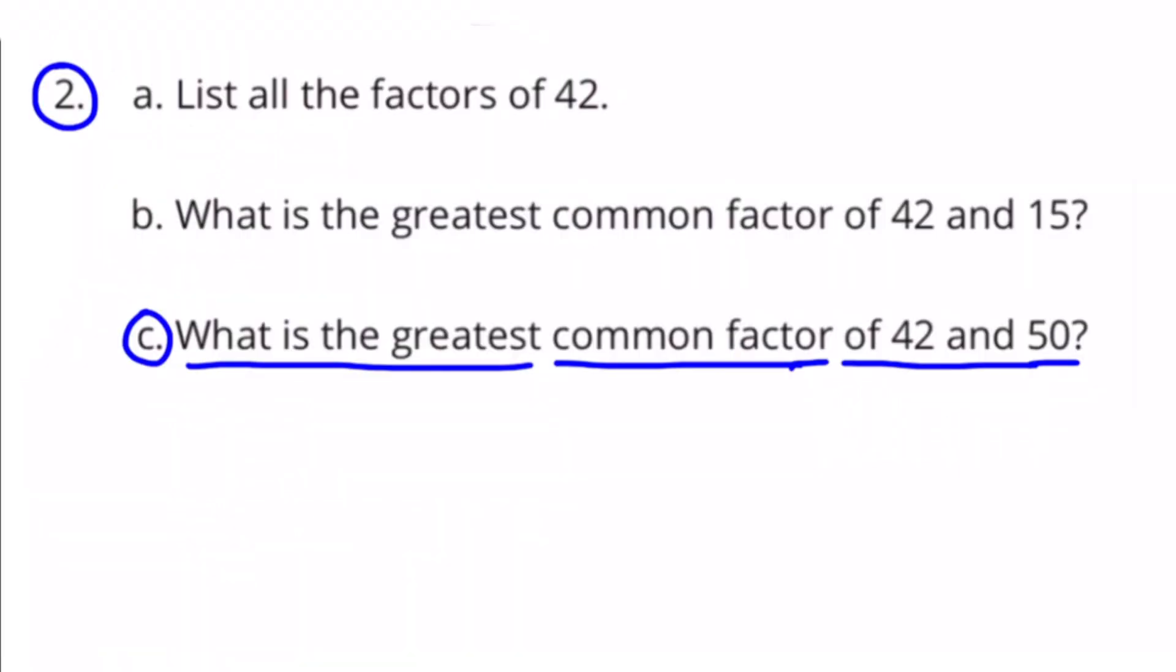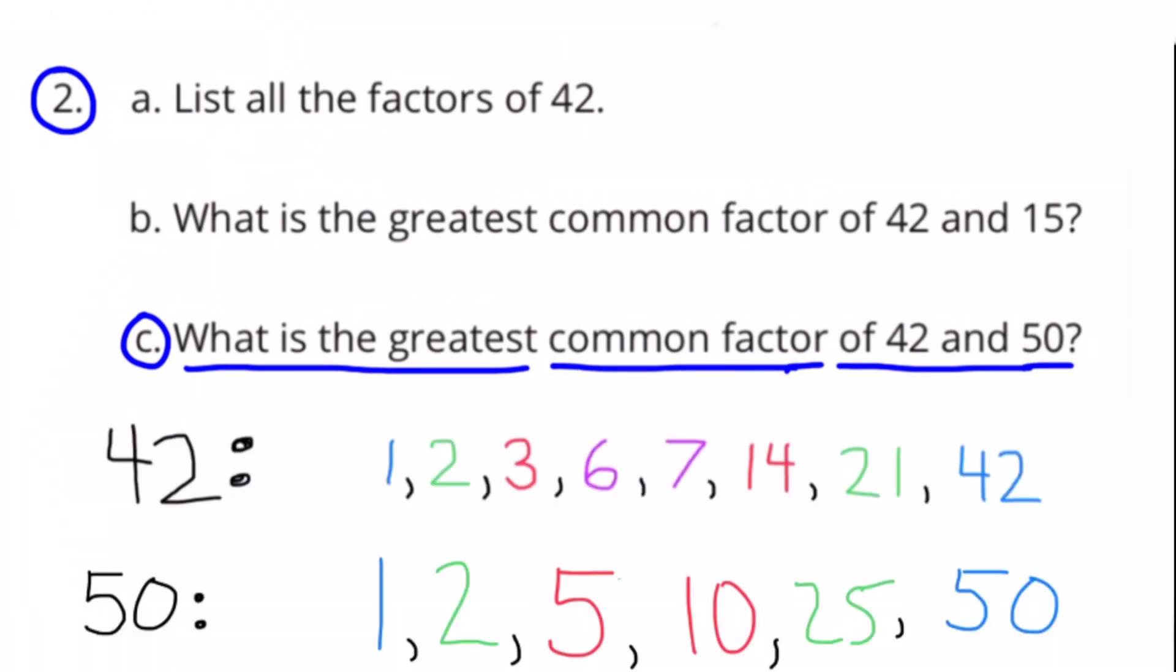2c. What is the greatest common factor of 42 and 50? Again, here we see the factors of 42. And beneath it, I have the factors of 50: 1, 2, 5, 10,